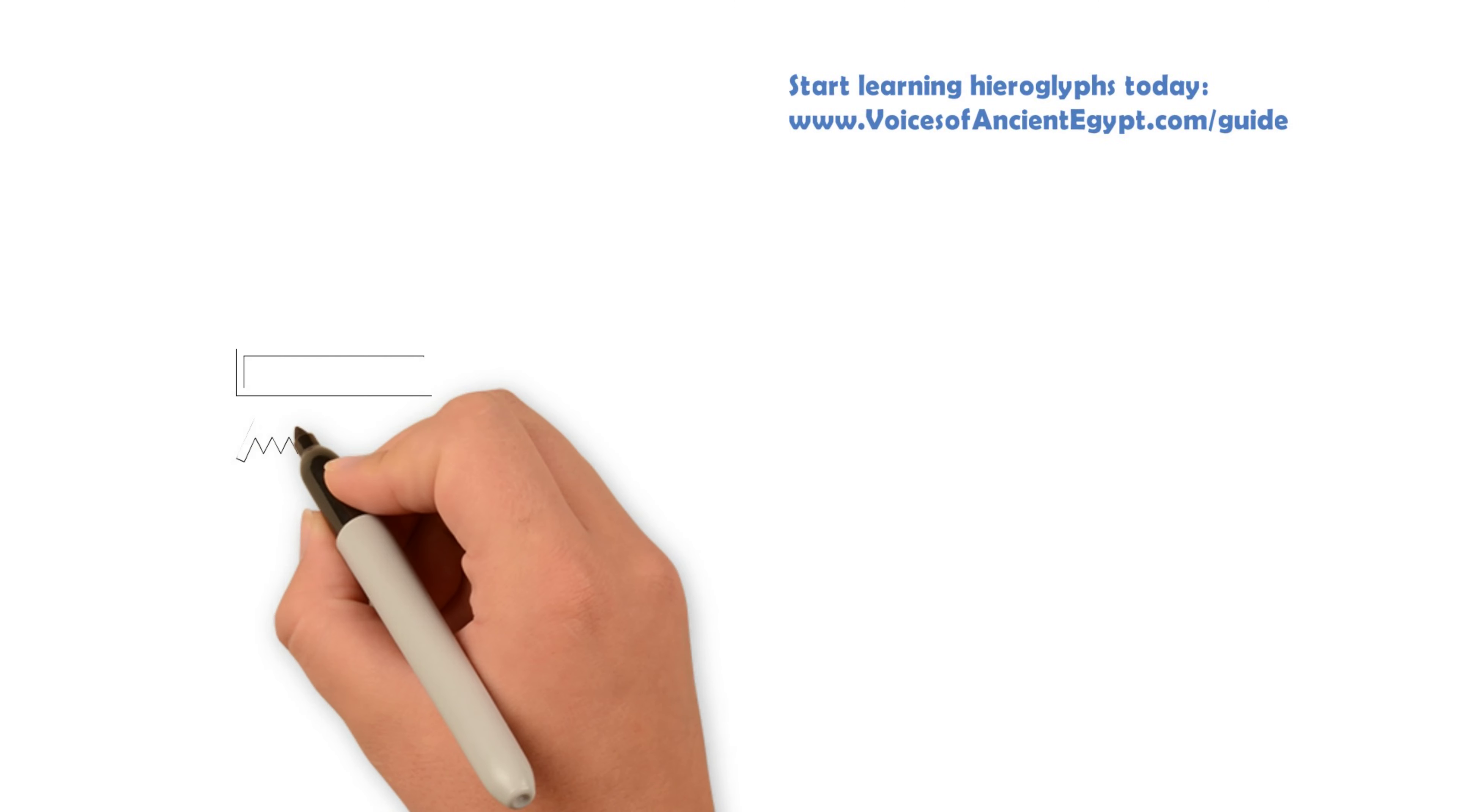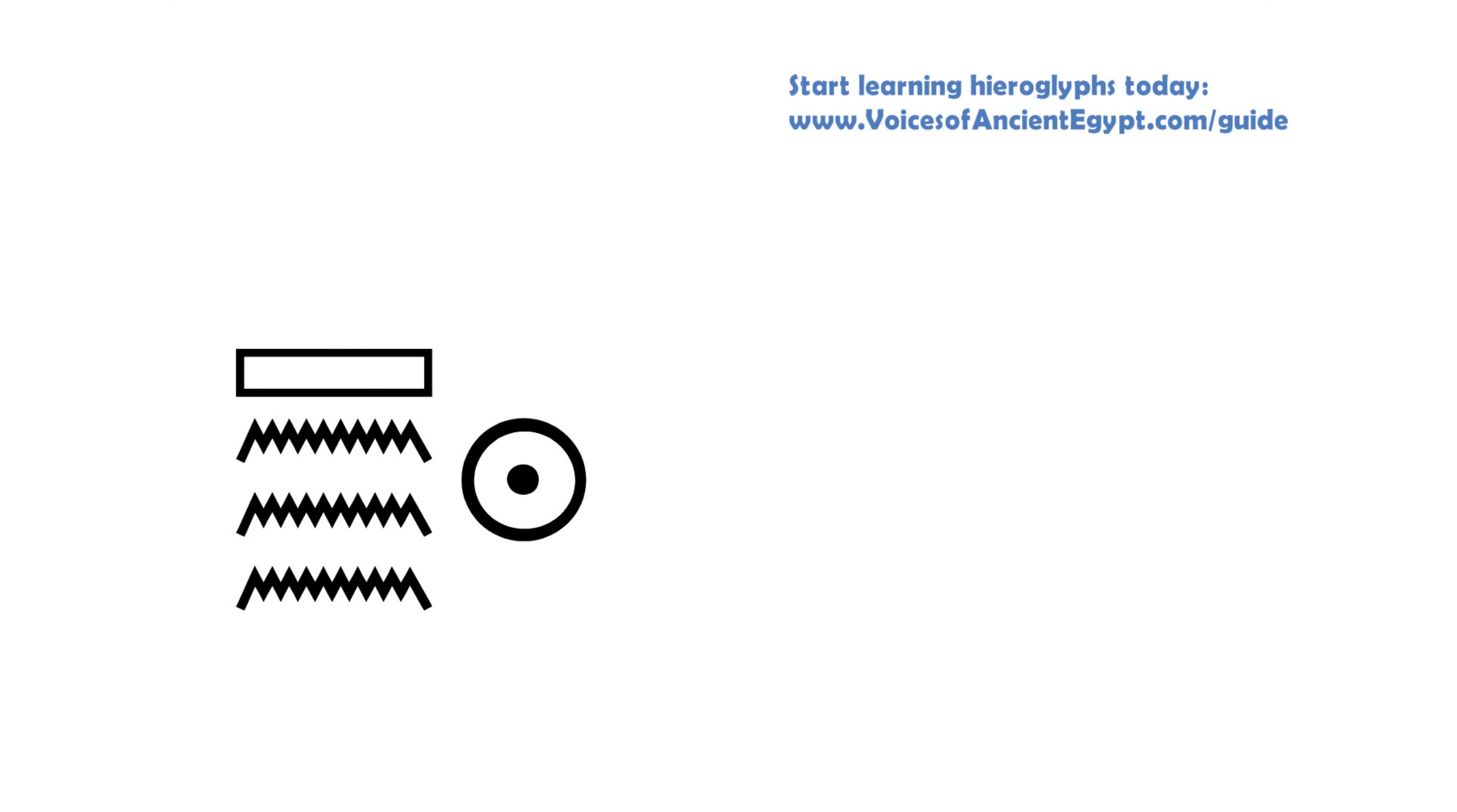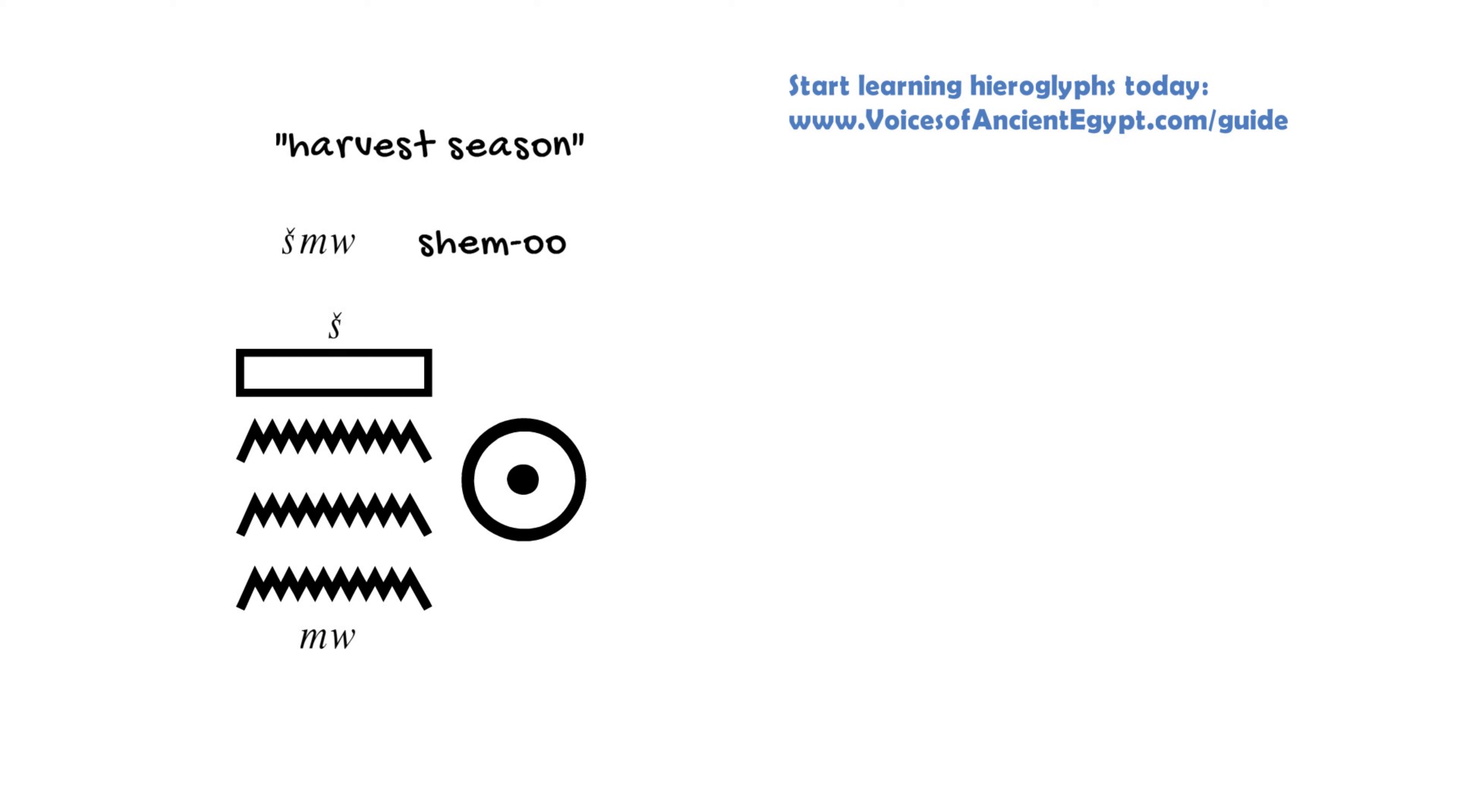Now, in Egyptian, because it is a one-consonant sign, of course, it can be used in many different ways. So let's look at a couple of words in which it can be used. One common word that you'll see it used in is the word shemu, which is a name of one of the seasons in ancient Egypt.